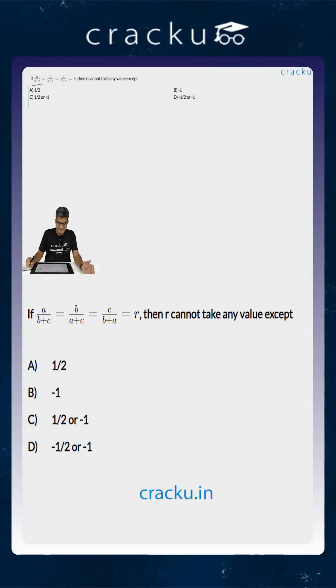a by b plus c is equal to b by a plus c is equal to c by b plus a is equal to r. So r is equal to a by b plus c which is equal to b by a plus c.